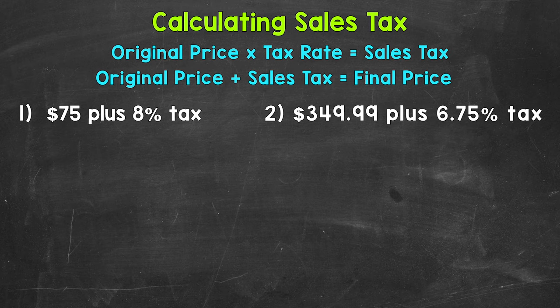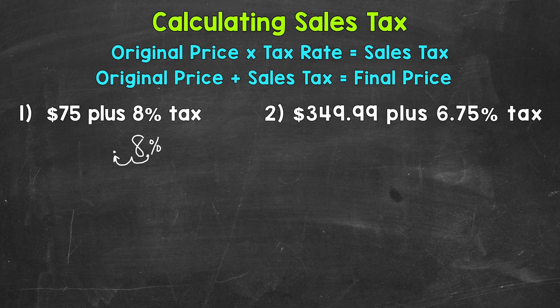So for number one, we have 8%. Let's move that decimal twice to the left. For a whole number, the decimal comes after the number. Moving it once, then twice to the left gives us 0.08 in decimal form.